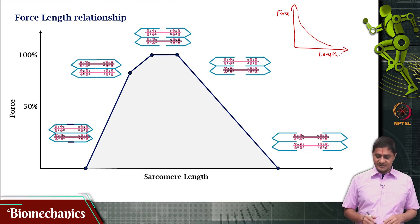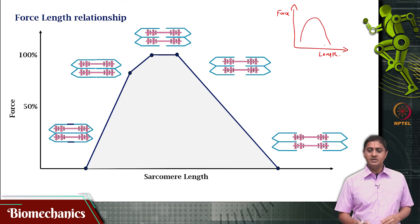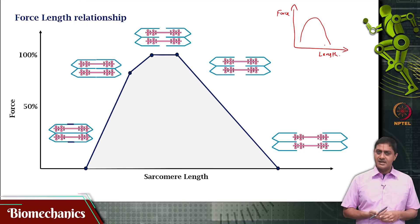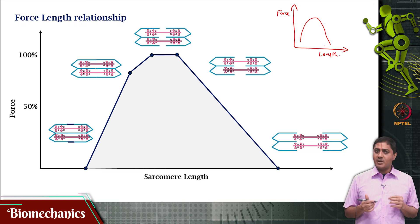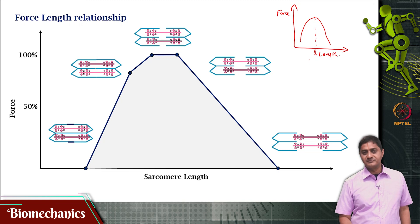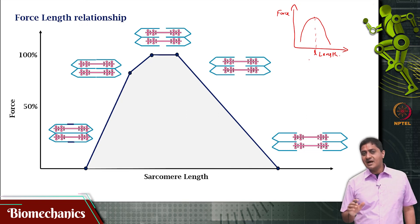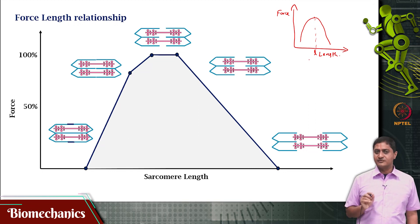What is observed in reality is something like a non-monotonic relationship as shown in this plot. It seems like there is an optimal length at which maximum force is produced. At lengths above this optimal length, force is reduced; at lengths below this optimal length, force is also reduced.